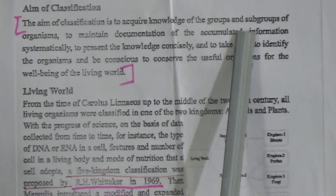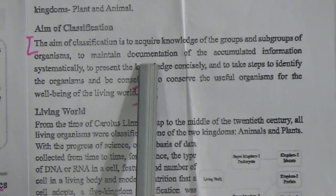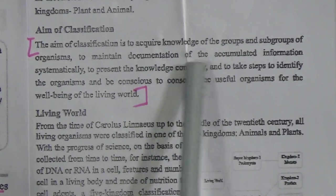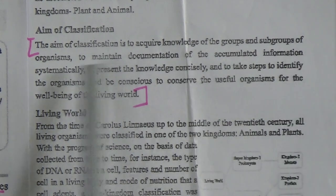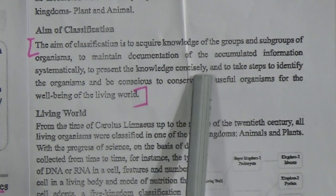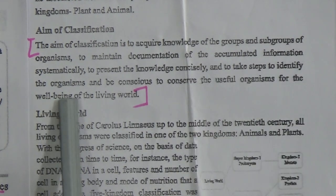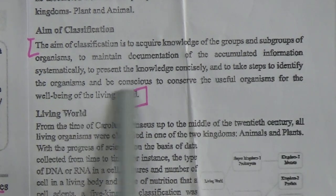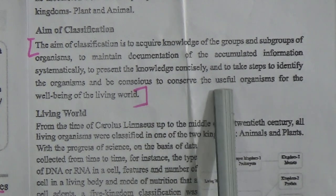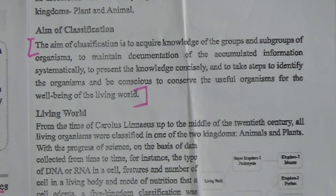The aim of classification is to acquire knowledge of the groups and subgroups of organisms, to maintain documentation of accumulated information systematically, to present knowledge consciously, and to take steps to identify organisms and be conscious to conserve the useful organisms for the well-being of the living world.